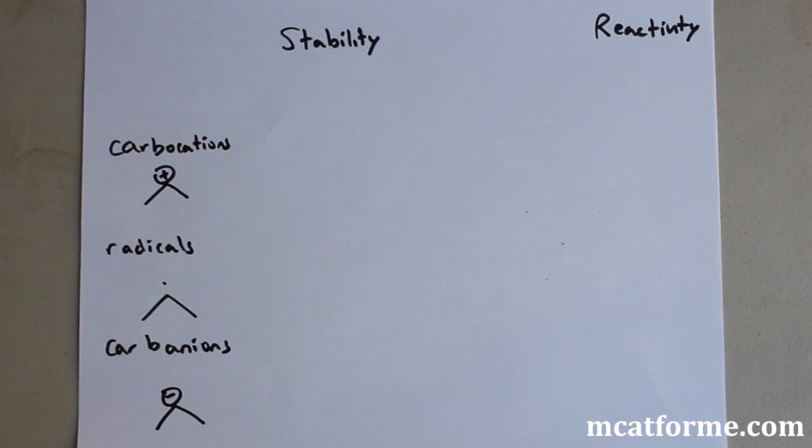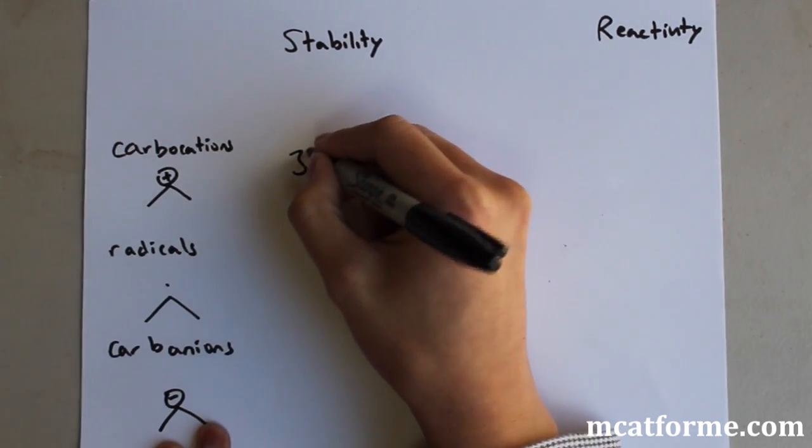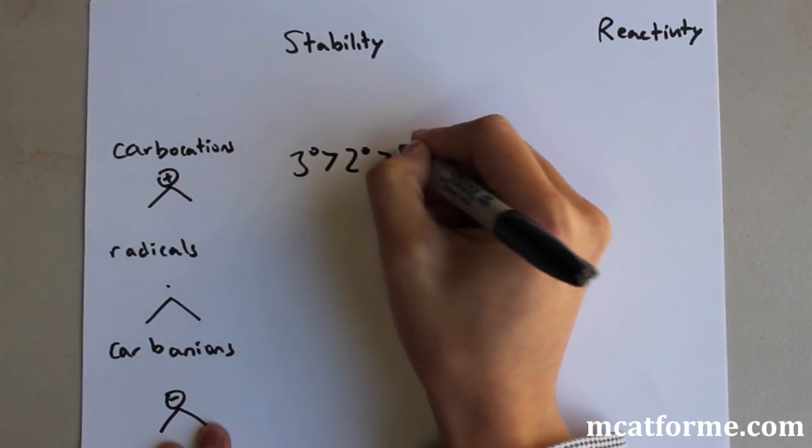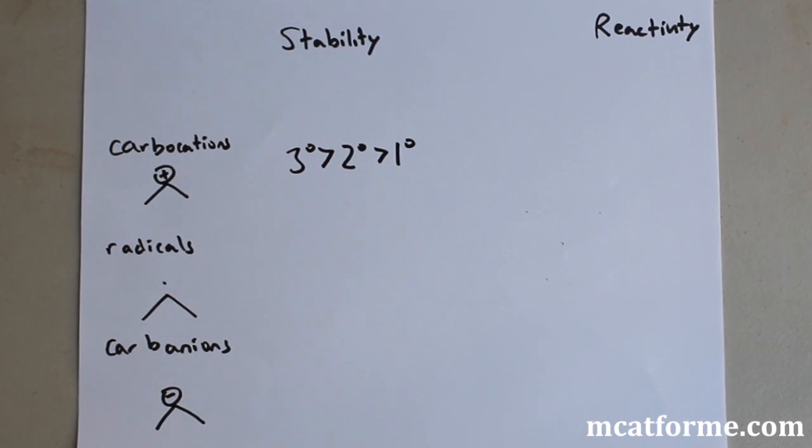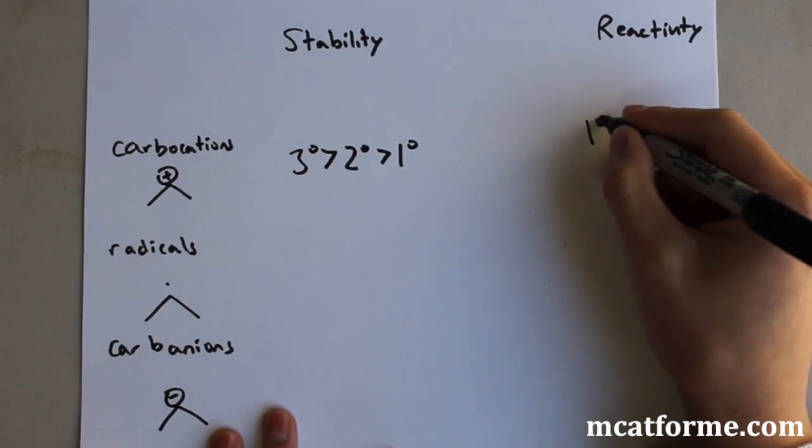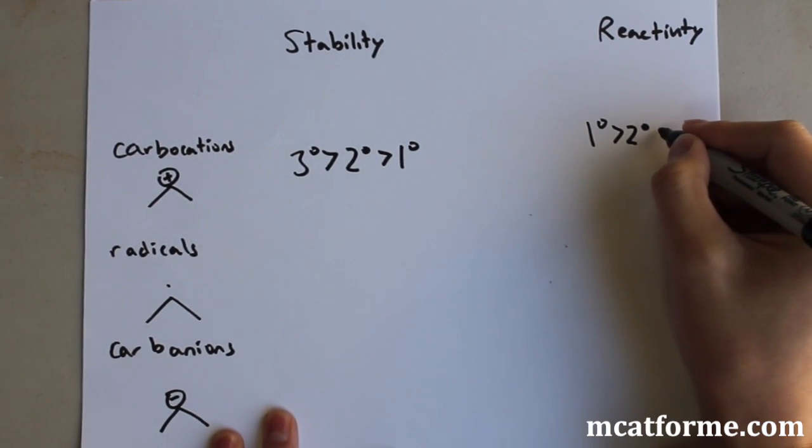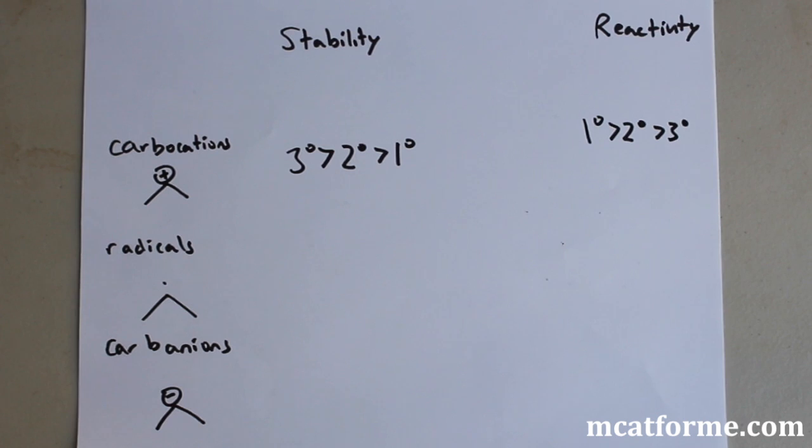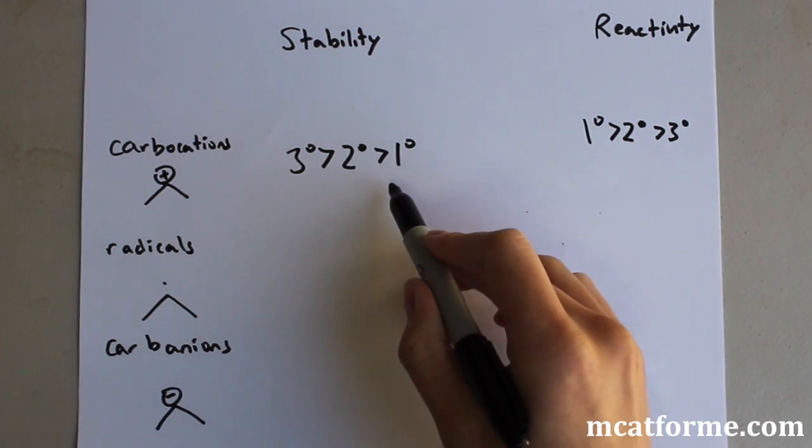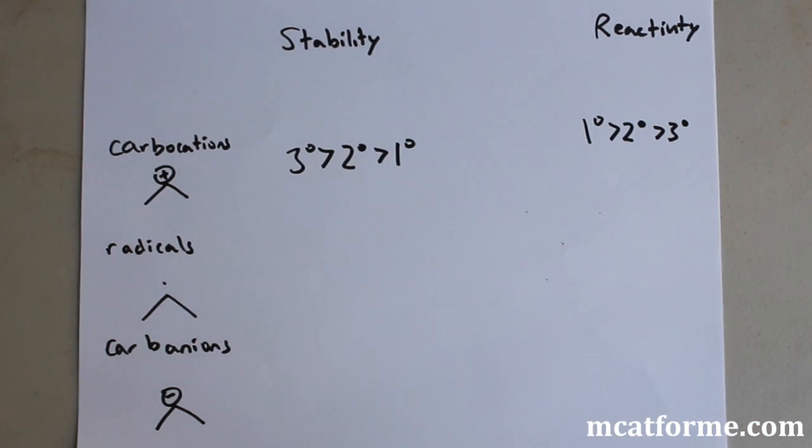In terms of stability versus reactivity, tertiary is going to be the most stable for carbocations. In terms of reactivity, we would see the exact opposite, because stability and reactivity are completely opposite from each other. If something is more stable, why would it want to react? If it was less stable, then it would definitely want to be very reactive, which is why the primary is very reactive.